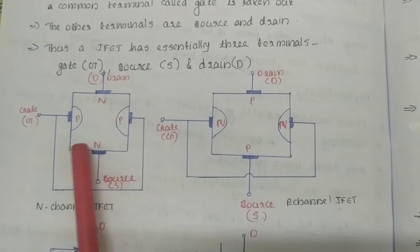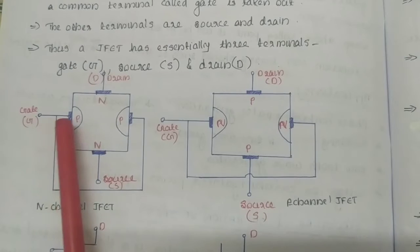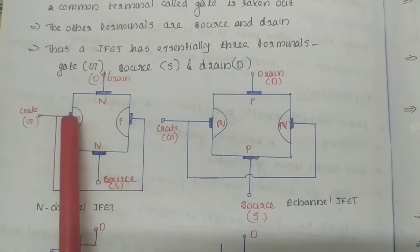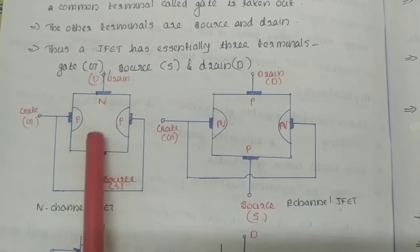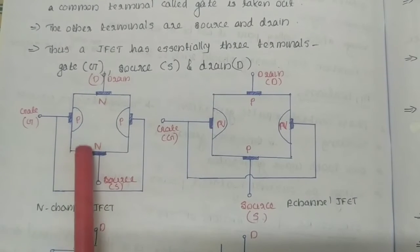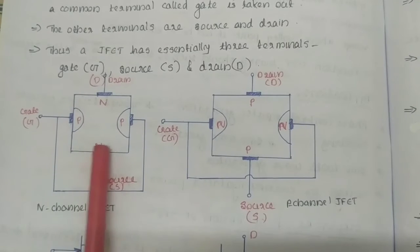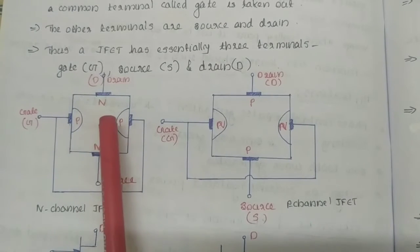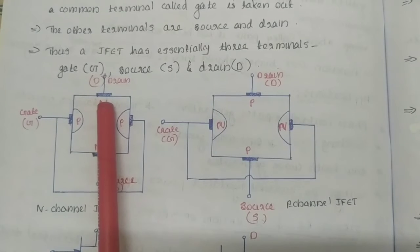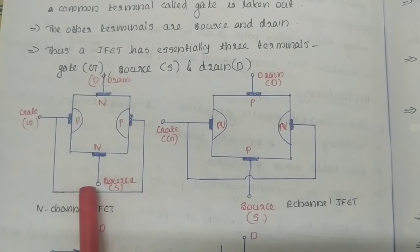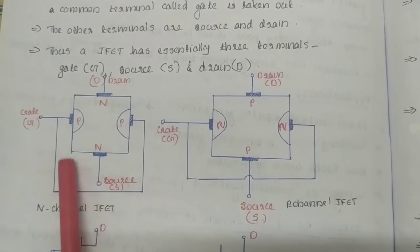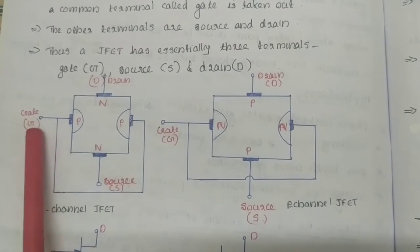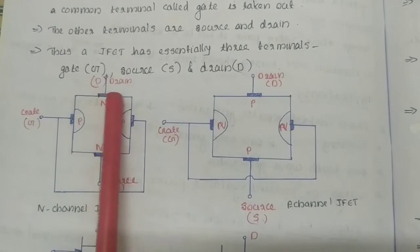The channel is N-type material, and two small P-type regions are fabricated near the N-type channel. The N-type material is the major part of the entire structure. Through ohmic contacts, the top of the channel is connected to the drain terminal and the bottom of the N-channel is connected to the source. The two P-regions are connected together to the gate terminal. This is the N-channel JFET.